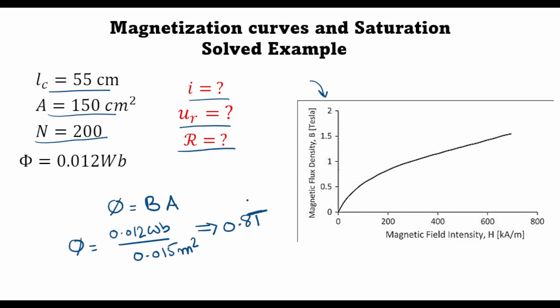So now I have an operating point for my magnetic material. It is operating at a magnetic flux density of 0.8 tesla. So the magnetic material is operating at a flux density of 0.8 tesla, which will occur somewhere here.